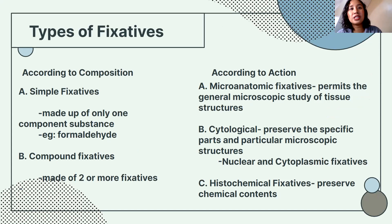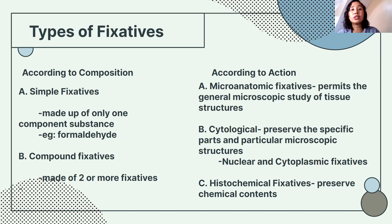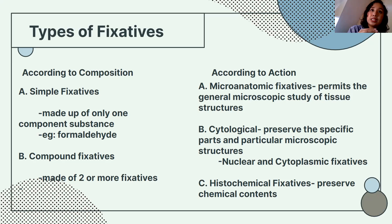According to their action, we have microanatomic fixatives, cytological fixatives — which preserve the nucleus and cytoplasm — and histochemical fixatives, which preserve chemical components like carbohydrates, glycogen, and mucopolysaccharides. Histochemical fixatives focus on the chemical components, while microanatomic fixatives focus on the anatomy and morphology of cells.